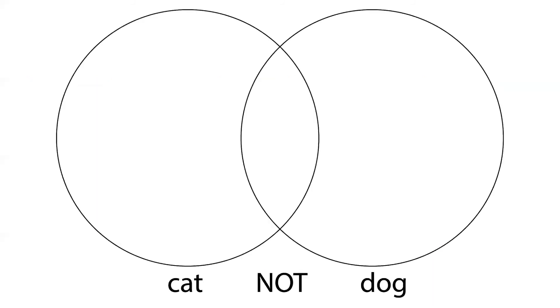The last Boolean operator is NOT and you use it when you want to exclude a word from your search. In this example, if we want results back with the word cat but not dog and we use the search string cat not dog, what part of the diagram will we get back?